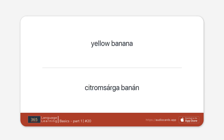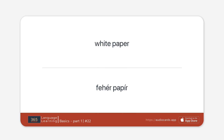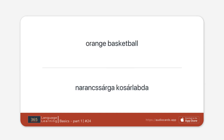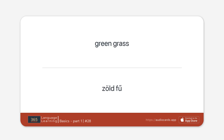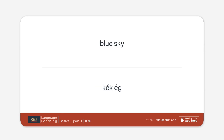Yellow banana. Black box. White paper. Red rose. Orange basketball. Pink tulip. Purple violet. Gray cloud. Green grass. Brown bear. Blue sky. And. But. Or. Because.